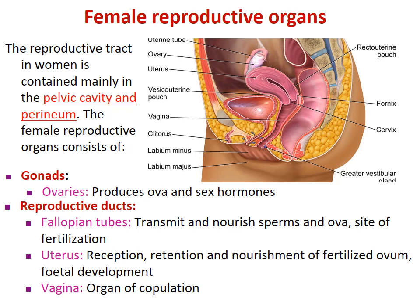The gonads are the ovaries. Ovaries produce the ovum — the single female gamete — and sex hormones like estrogen and progesterone. The reproductive duct is the fallopian tube, which transmits and nourishes the sperm and ovum and is the site of fertilization. The ovum from the ovary is taken up by the finger-like projections at the last part of the fallopian tube. Since the tube is connected with the uterus and the uterus with the vagina, sperm travels from the vagina through the uterus into the fallopian tube, where fertilization occurs in the infundibular region.